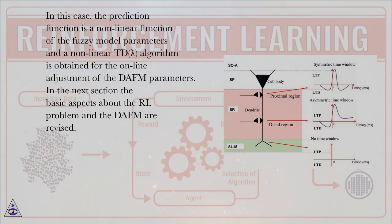In this case, the prediction function is a non-linear function of the fuzzy model parameters, and a non-linear TD-lambda algorithm is obtained for the online adjustment of the DAFM parameters. In the next section, the basic aspects about the RL problem and the DAFM are revised.